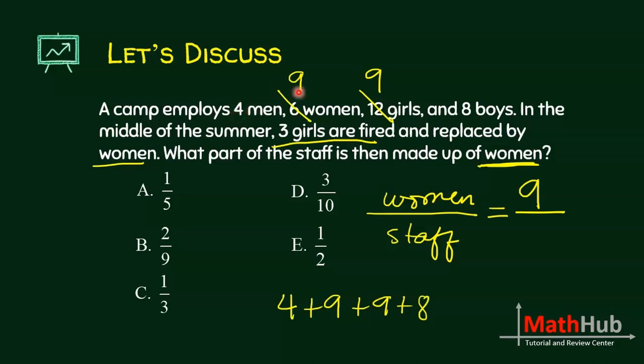We have 4 men, 9 women, 9 girls, and 8 boys. So that's 4 plus 9, 13 plus 9, 22 plus 8 is 30. When we simplify, this is divisible by 3, so we have 3 over 10, letter D.